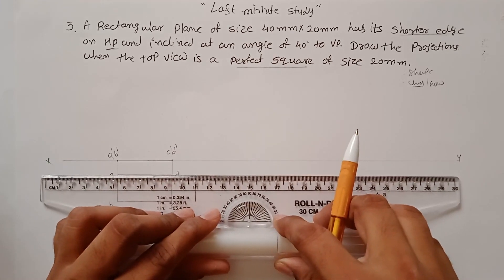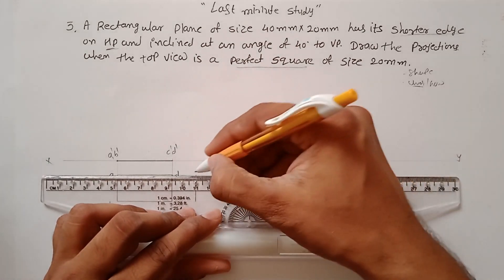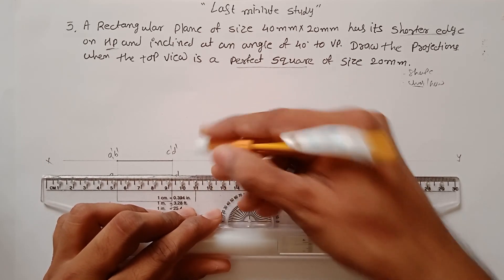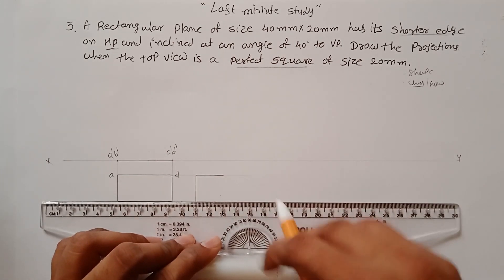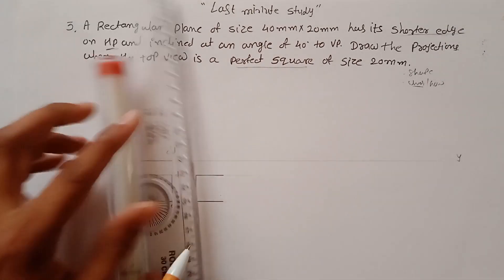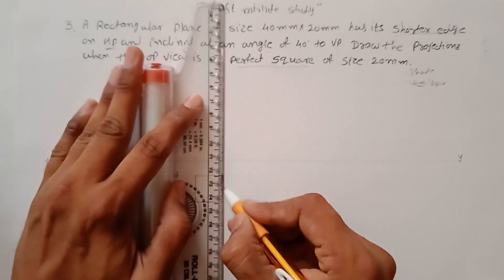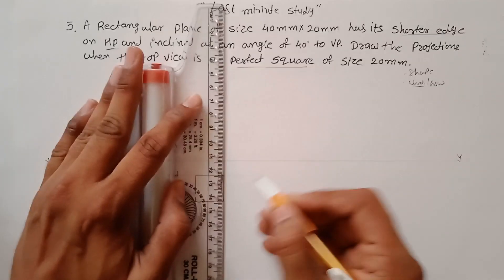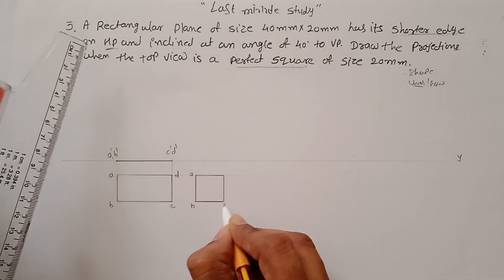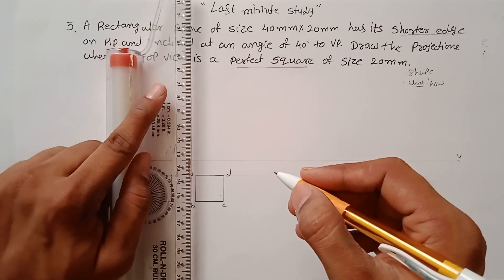Construct a 20 mm square, complete it, and label the corners A, B, C, and D. You don't know the inclination yet — you have to find it out by projecting.